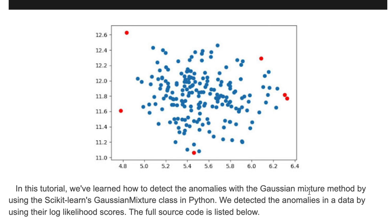That's it for this tutorial. We have briefly learned how to detect anomalies with the Gaussian Mixture method by using Scikit-learn's Gaussian Mixture class. We detected the anomalies in data by using their log likelihood scores, and the full source code is listed below.